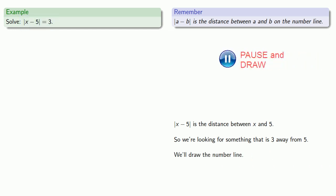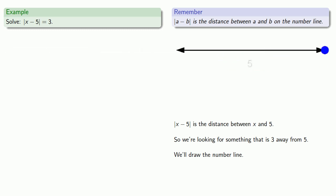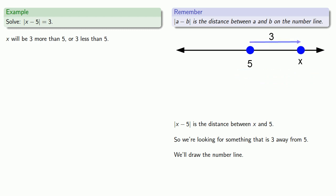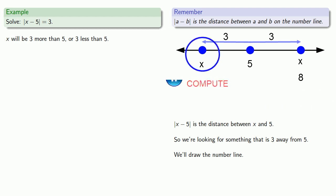So we'll draw our number line and locate 5. Wherever x is, it's 3 away. So x will either be 3 more than 5 or 3 less than 5. We'll put x up here at 3 more than 5, but we could also have x down here at 3 less than 5. So what's x? If x is up here, then x equals 8. But if x is down here, then x equals 2. And so we have our solutions: x equals 2 or x equals 8.